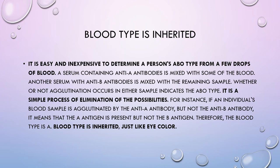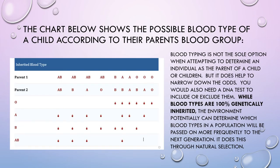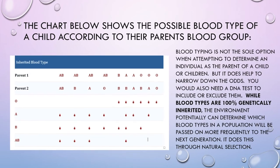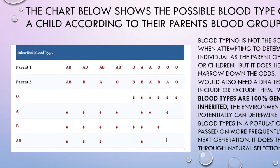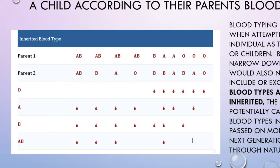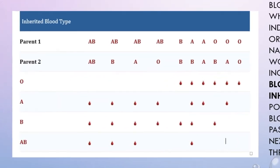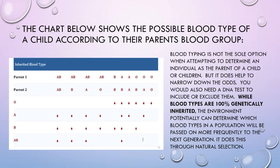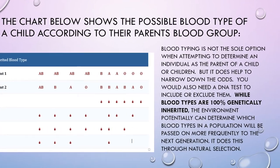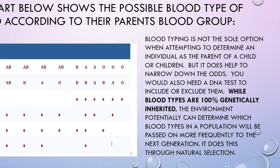Blood type is inherited, just like eye color. While blood types are 100% genetically inherited, the environment potentially can determine which blood types in the population will be passed on more frequently to the next generation. It does this through natural selection.